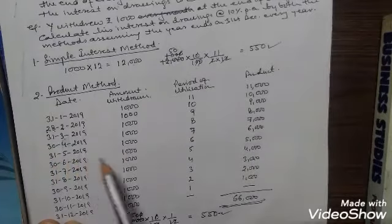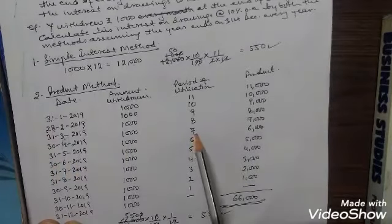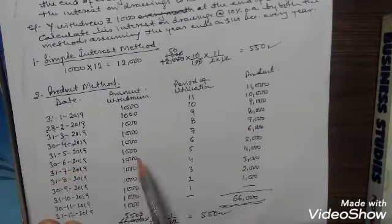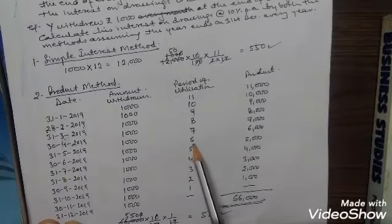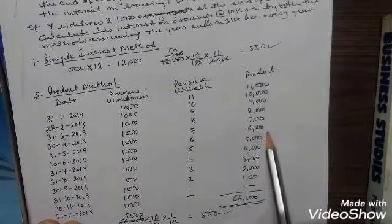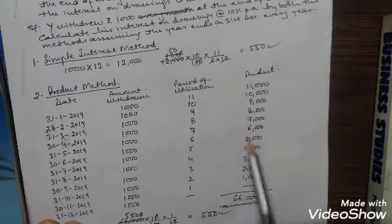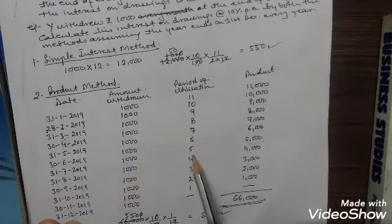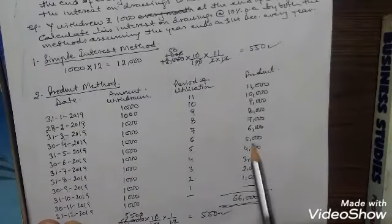On 31st May 2019, rupees 1000 has been withdrawn; 7 months is the utilization period, product is 7,000. On 30th June 2019, rupees 1000 has been withdrawn; 6 months utilization, product is 6,000. On 31st July 2019, rupees 1000 has been withdrawn; 5 months is the utilization period, product is 5,000.